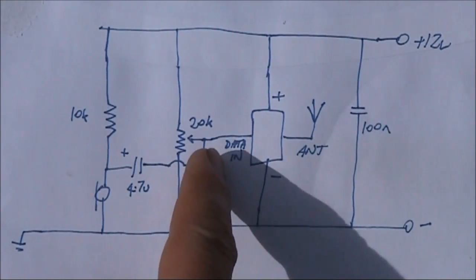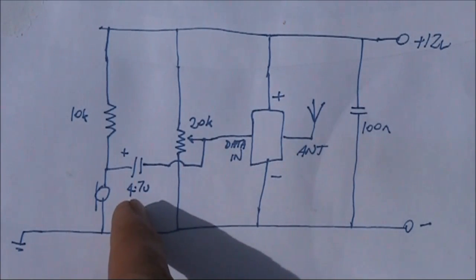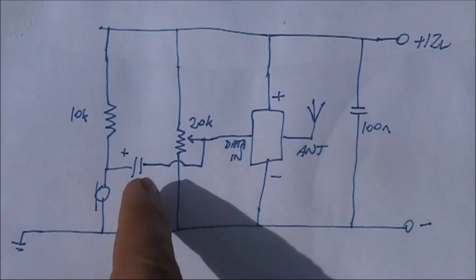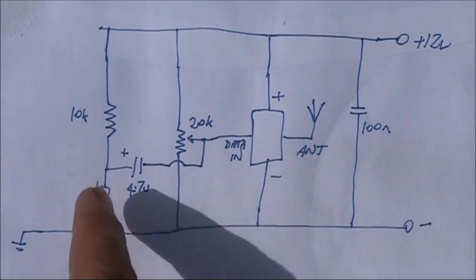Attached to the wiper of the 20k pot is a 4.7 microfarad capacitor which couples the audio from the microphone into the UHF module.